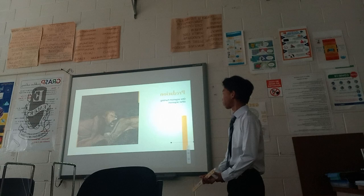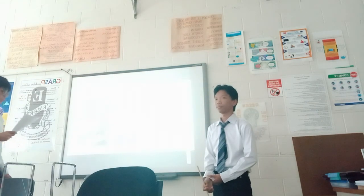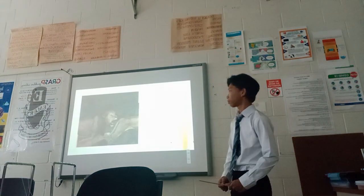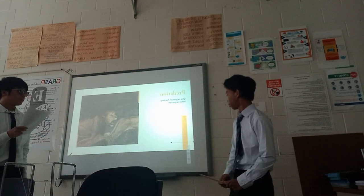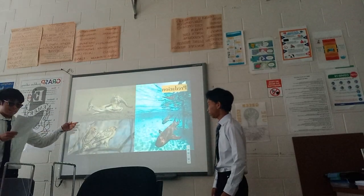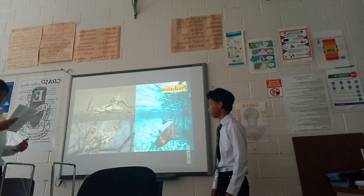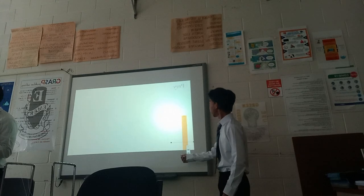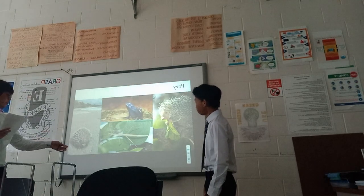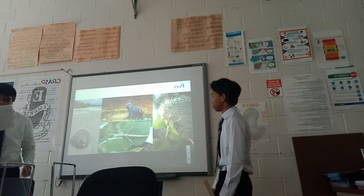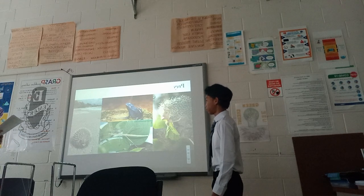Next, we'll discuss predation and herbivory — fundamental ecological interactions that shape the dynamics of ecosystems. Predation involves the hunting, capturing, and consuming of one organism by another for food. Predators have various adaptations such as sharp claws, keen senses, and agility. Examples include lions hunting gazelles, sharks preying on fish, and hawks preying on mice. Prey species have developed defensive mechanisms to evade predation, including camouflage as seen in walking stick insects, spines as seen on puffer fish and porcupines, and toxins as seen in poisonous dart frogs.